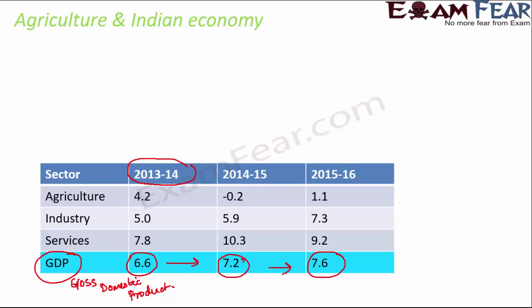This rising GDP shows that India's economic performance is also increasing. But how is this GDP generated? It comes from different sectors — from the agriculture sector, the industry sector, and the services sector — and they all add up to give the overall or net GDP.